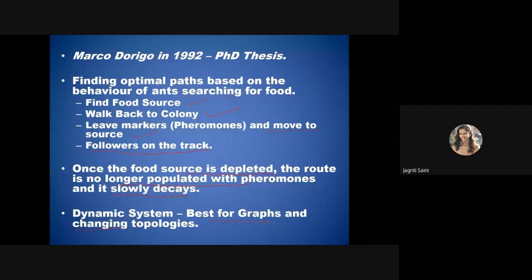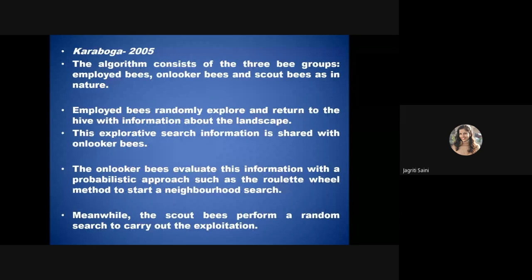The artificial bee colony algorithm consists of three bee groups: employed bees, onlooker bees, and scout bees. Employed bees randomly explore the surrounding area and return to the hive with information about the landscape. This explorative search information is shared with onlooker bees, who then evaluate the information brought by the employed bees.